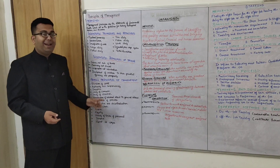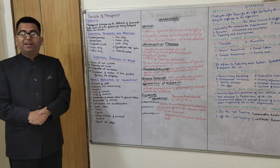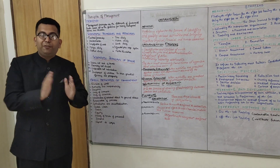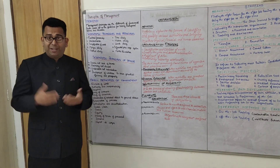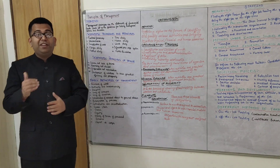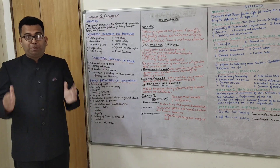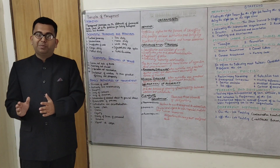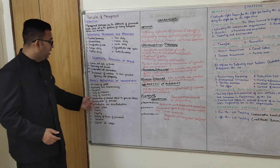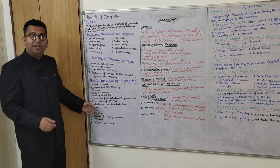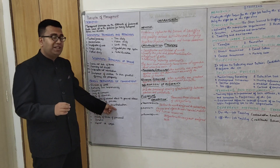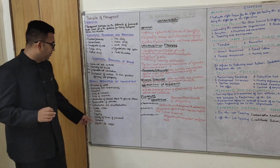Eighth is centralization and decentralization. Centralization refers to concentration of power in few hands — that is, top-level management. When there is even distribution of power among all levels of management, it is decentralization. Centralization is normally for small companies and decentralization is normally for large companies.